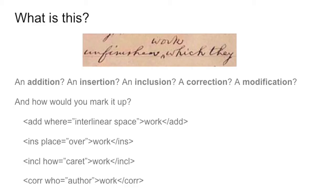But if we do not agree on the same name, we may have some problems afterwards to share our files, share our work, and to understand each other. In fact, a correction, a modification, and an addition are not the same thing. And once we have agreed on what it is, how do you mark it up? Which is the name of the element you will use? We can call it 'add' and say it is in the interlinear space, or we can call it 'ins' meaning above. So you see some examples of possible encoding of the same thing.